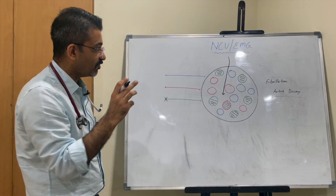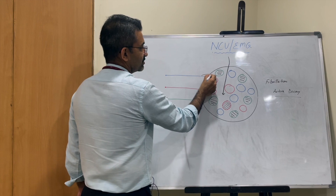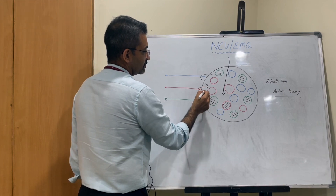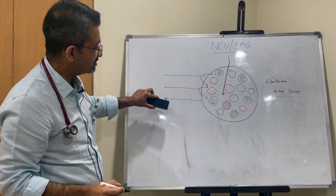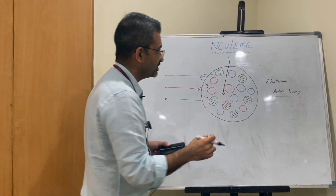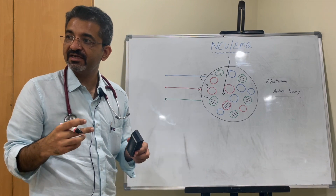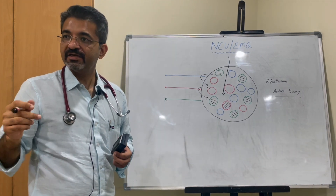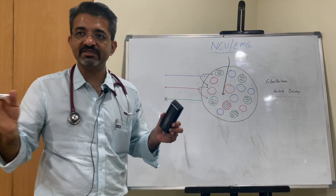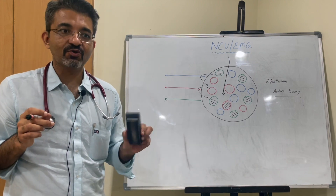After the green anterior horn cell is lost, the blue and red will give out sprouts to supply the decayed fibers and compensate for the loss. This compensation takes time, meaning fasciculation occurs in a chronic disease, not an acute problem. So if you hear fasciculation on EMG, it means there is a long-standing disease, whereas fibrillation means something active is currently going on.